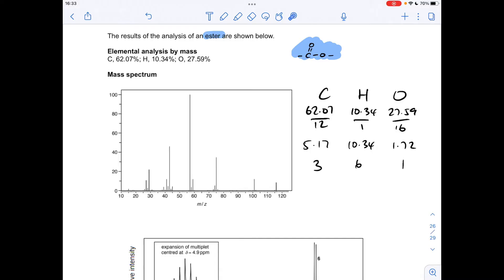Okay, so make a start then. We're told it's an ester, so obviously you've got this functional group. We've got the elemental analysis by mass and percentages, so I've worked out the empirical formula. I've got the ratio so far: three carbons to six hydrogens to one oxygen, so the empirical formula is C3H6O.